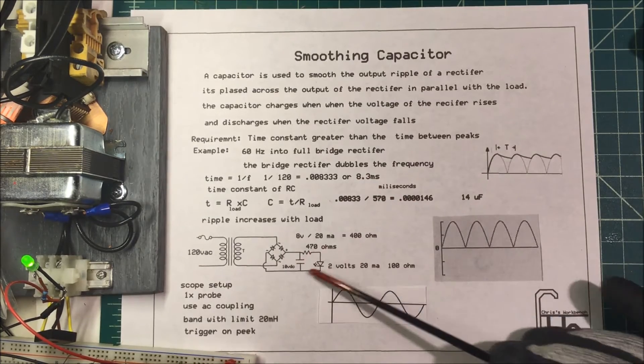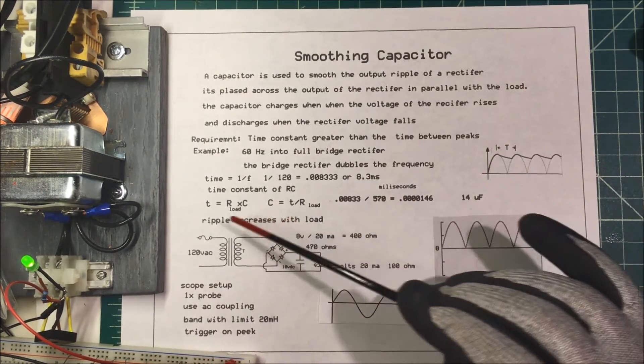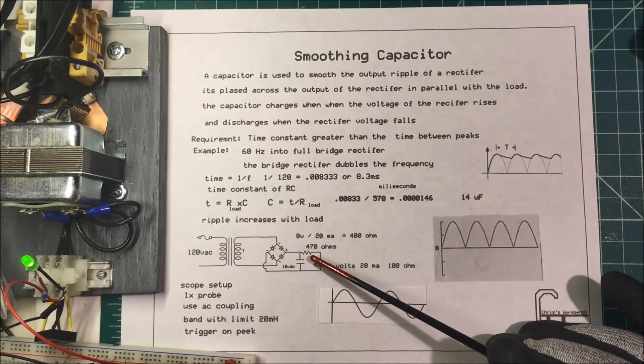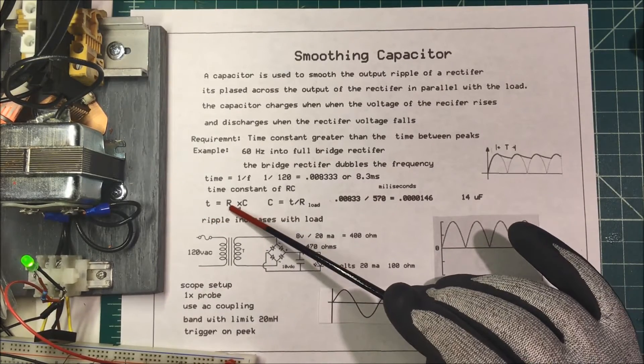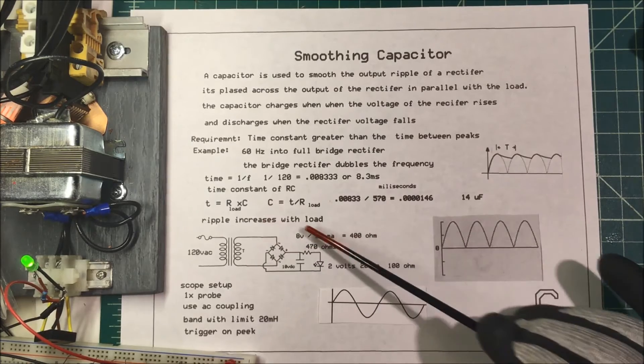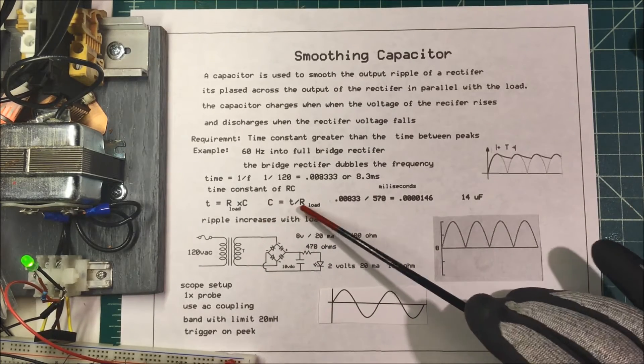We have an RC circuit here and we want to find the time constant. Time is equal to the resistance times the capacitance, so capacitance equals time divided by resistance.